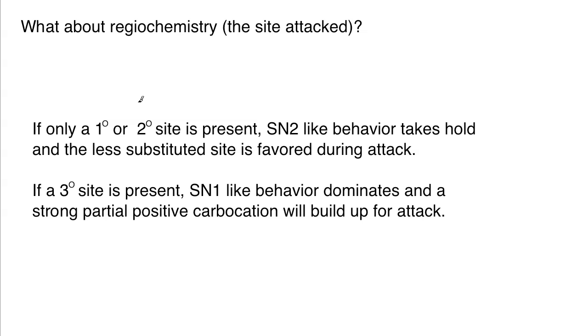If you only have primary and secondary sites present, SN2-like behavior will take hold and the less substituted site will be favored during the attack, so sterics will be avoided. If you have a tertiary site present, any tertiary site at all, then SN1-like behavior will dominate and a strong partial positive carbocation will build up for attack. Some people talk about Markovnikov and anti-Markovnikov addition. The truth is there's a bit of SN2 and SN1-like behavior or nature, and it's sort of a sliding scale depending on what substituents are there. Notice I said a partial positive carbocation, not an actual full carbocation. There's usually a mixture of products; however, one will be favored over another depending on what's present.